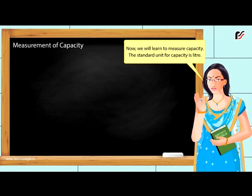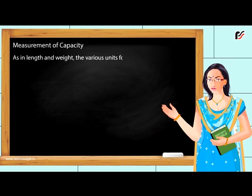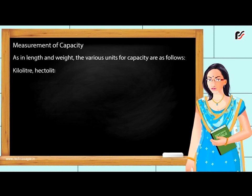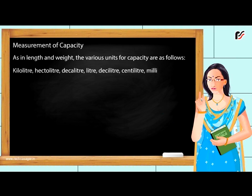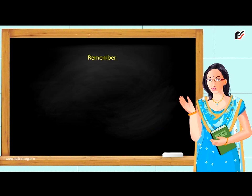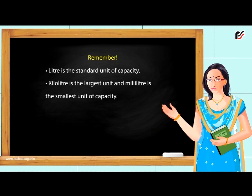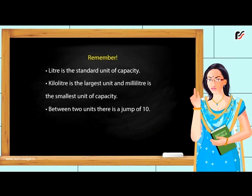Measurement of Capacity. Now we will learn to measure capacity. The standard unit for capacity is litre. As in length and weight, the various units for capacity are: kilolitre, hectolitre, decalitre, litre, decilitre, centilitre, millilitre. An easy way to remember is: 'King Harry died, mother didn't cry much.' Litre is the standard unit of capacity. Kilolitre is the largest unit and millilitre is the smallest unit of capacity. Between two units there is a jump of ten.